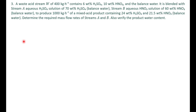Problem 3: A waste acid stream of 400 kg/hr contains 6 weight percent sulfuric acid and 10 weight percent nitric acid, with the balance being water. It is blended with stream A — an aqueous sulfuric acid solution of 70 weight percent — and stream B — an aqueous nitric acid solution of 60 weight percent nitric acid — to produce 1000 kg/hr of a mixed acid product containing 24 weight percent sulfuric acid and 21 percent nitric acid.